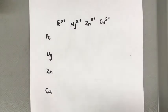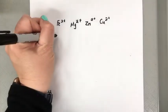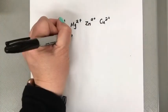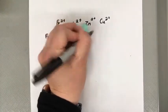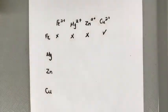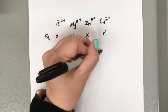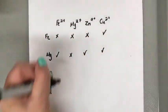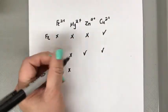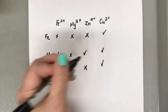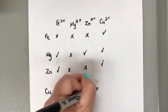So if we set that up in a data table, if we go across the iron, this was an X, there was an X, an X, and a check mark. And then for magnesium, there was a check mark, an X, a check, and a check. For zinc, there was a check, an X, an X, and a check. And then finally there were X's all the way across for copper.